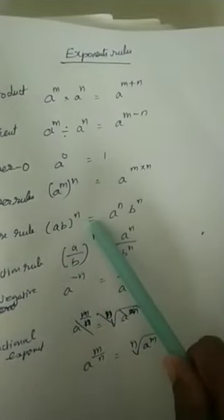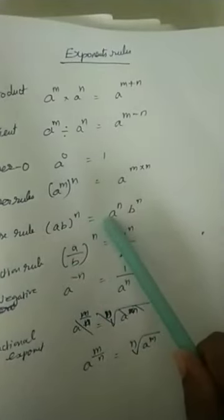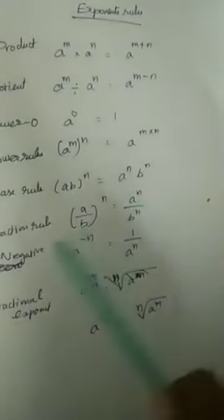Base rule: a b to the power n is equal to a power n into b power n.